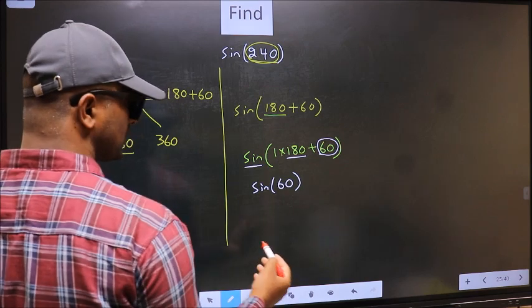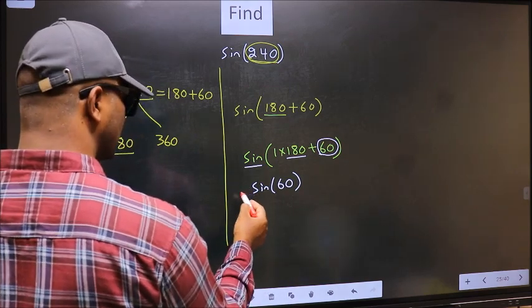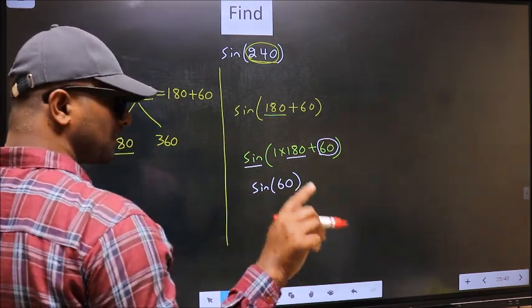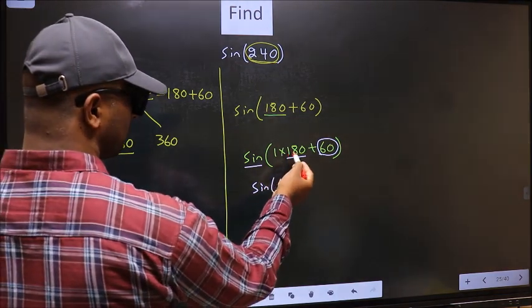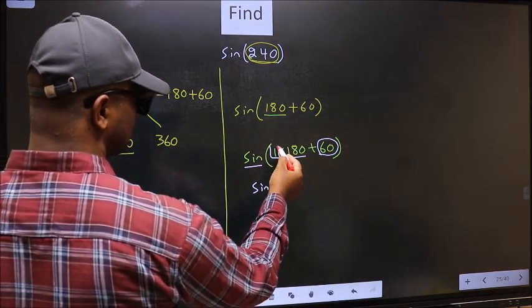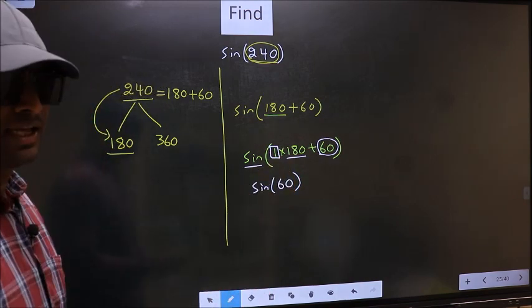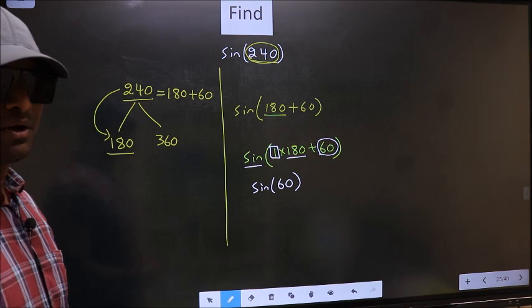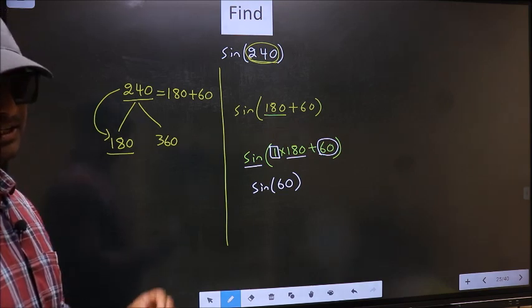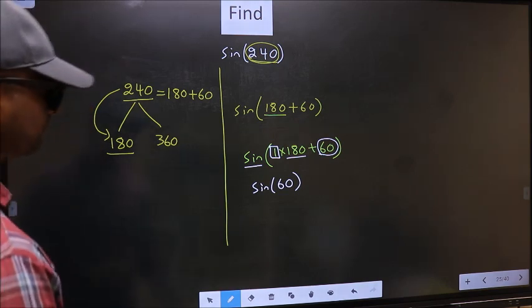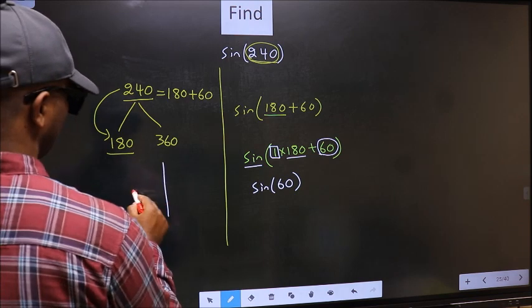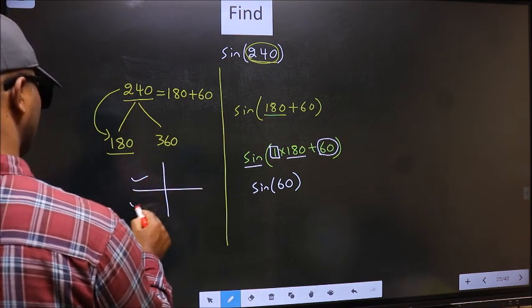Now the question is, will we get here plus or minus? To answer that, we should look at the number before 180. That is 1. That is 1, and 1 is odd. And all the odd multiples of 180, they lie in either the second or in the third quadrant.